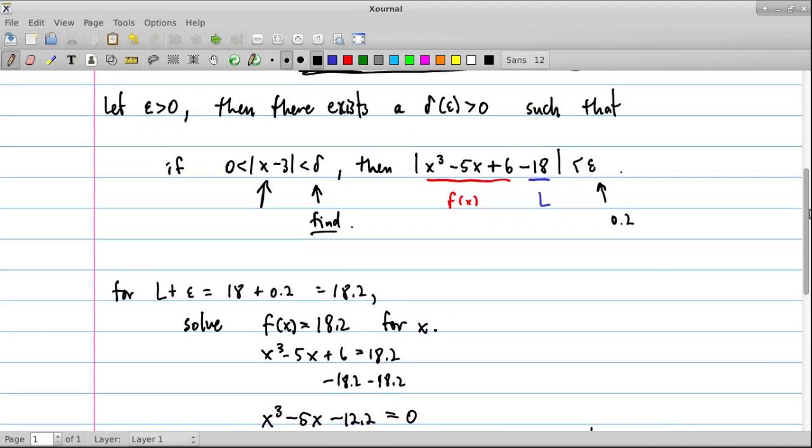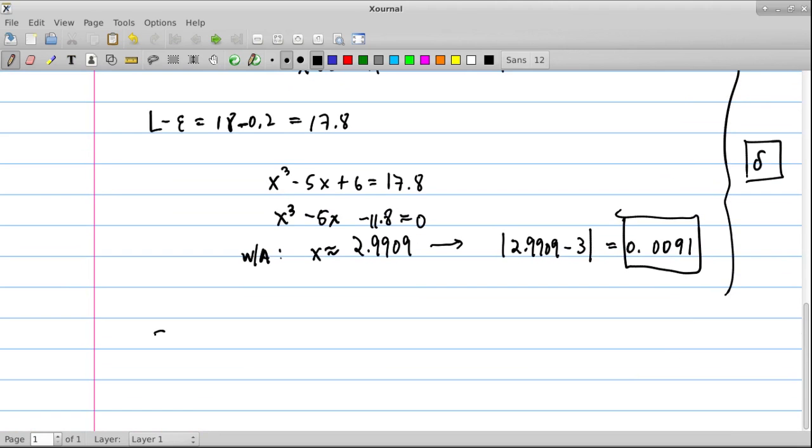And the problem in your homework, it also asks you to do the same thing for epsilon equal to 0.1. And you should be able to repeat this whole process to do that.